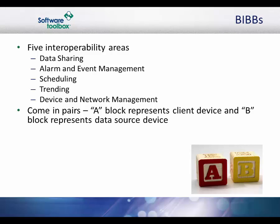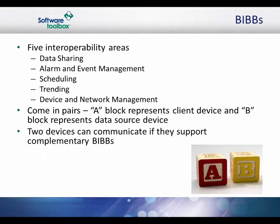BACnet interoperability building blocks, or BIBBs, come in pairs designated A and B that reflect the client-server nature of control system communication. The A BIBB represents the client or device that is trying to obtain information or command an action. The B BIBB represents the server or device that provides the data or carries out the command. If two devices support complementary BACnet capabilities — the A and B side of the same BIBB — then they are interoperable from the standpoint of that function. The basic idea is that for each kind of device included in a specification, the functional areas they need to support are selected, and BIBBs that apply to that functional area are chosen to match the level of desired sophistication.